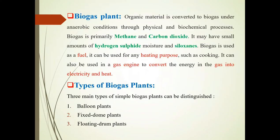So students, in a biogas plant, organic material is converted to biogas under anaerobic conditions through physical, chemical, and biochemical processes. It means biomass is converted to biogas. Biogas is primarily methane, carbon dioxide, and very small amounts of hydrogen sulfide and siloxanes. Mainly the methane percentage is high in biogas, and the second component is carbon dioxide, with the remaining two present in very small amounts.